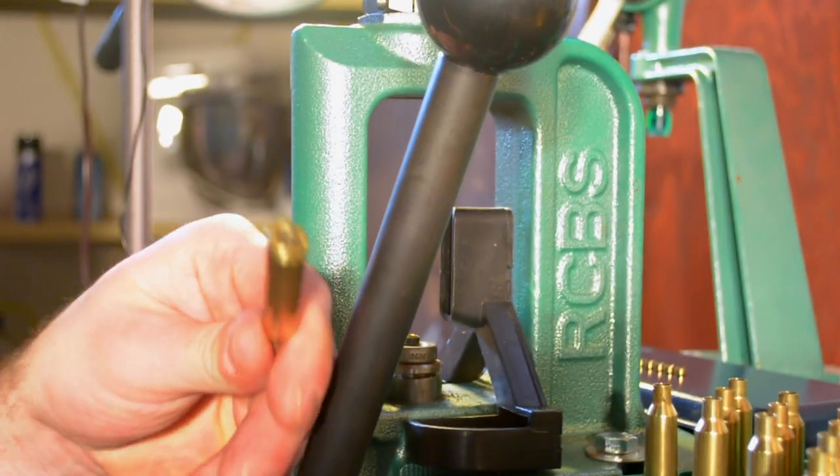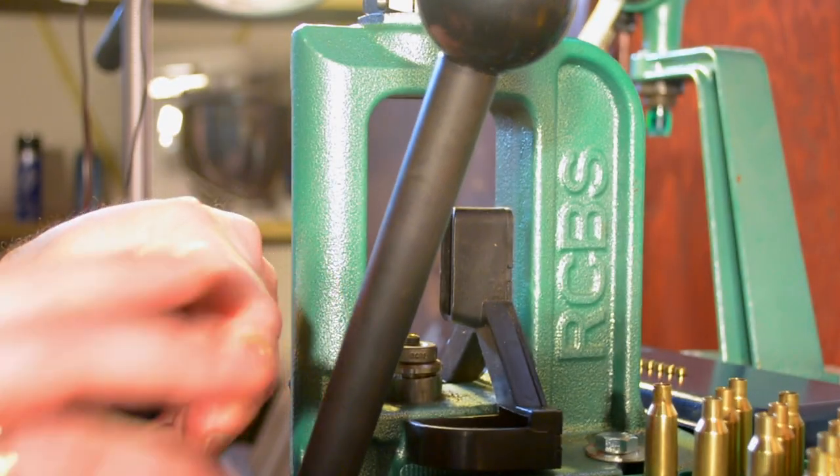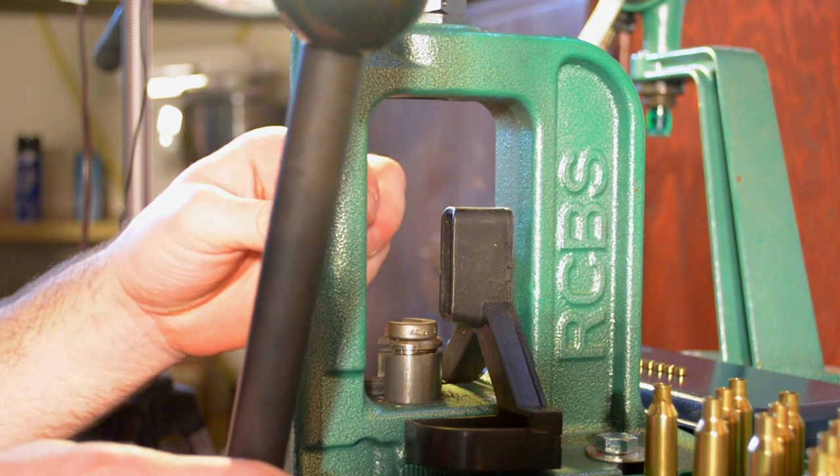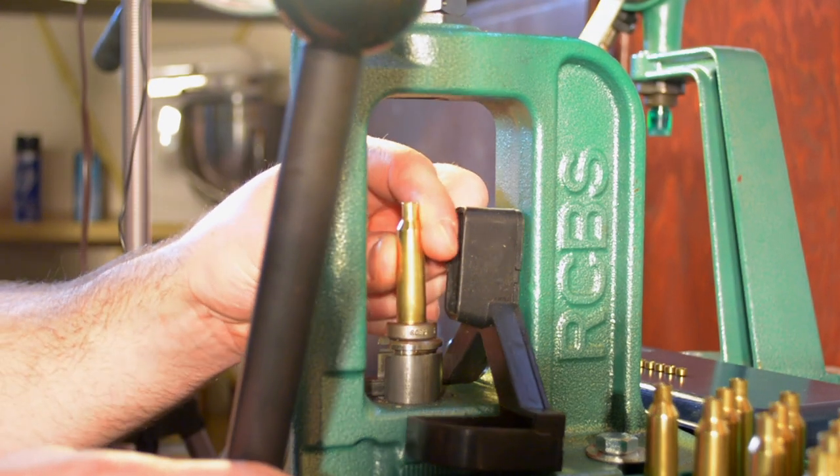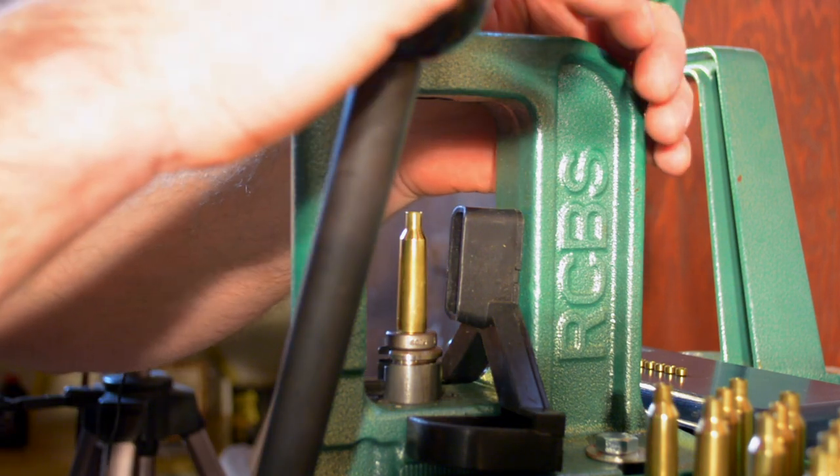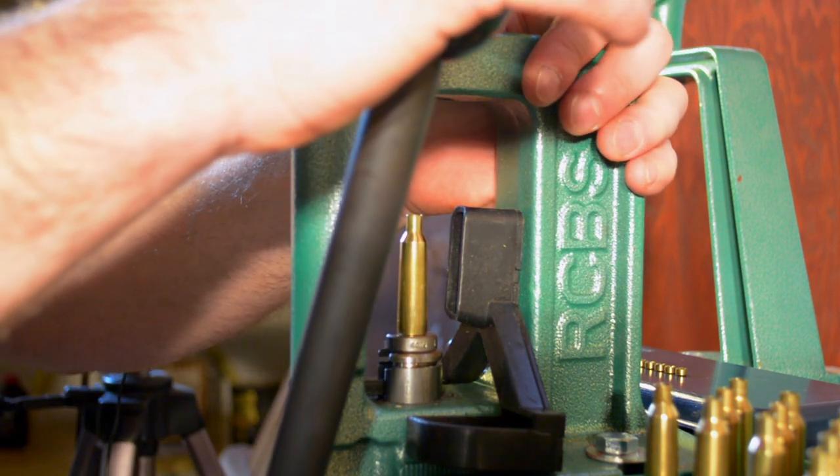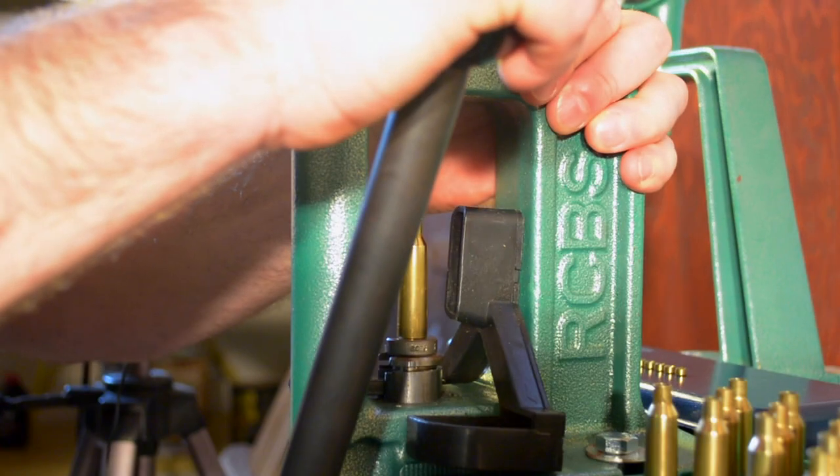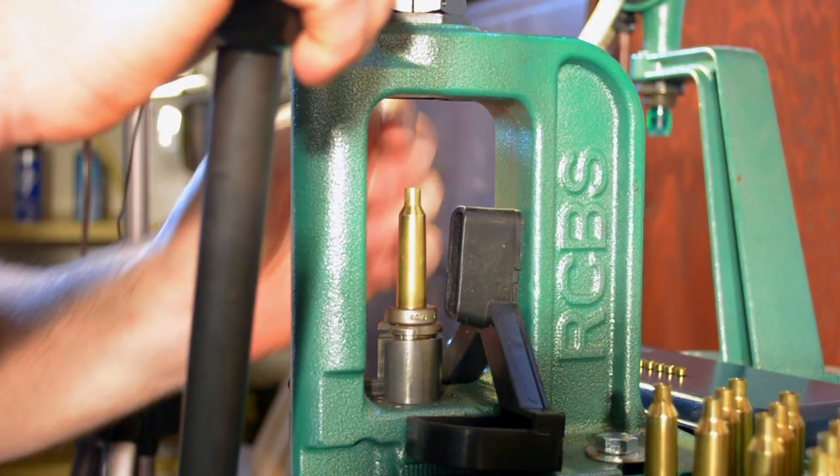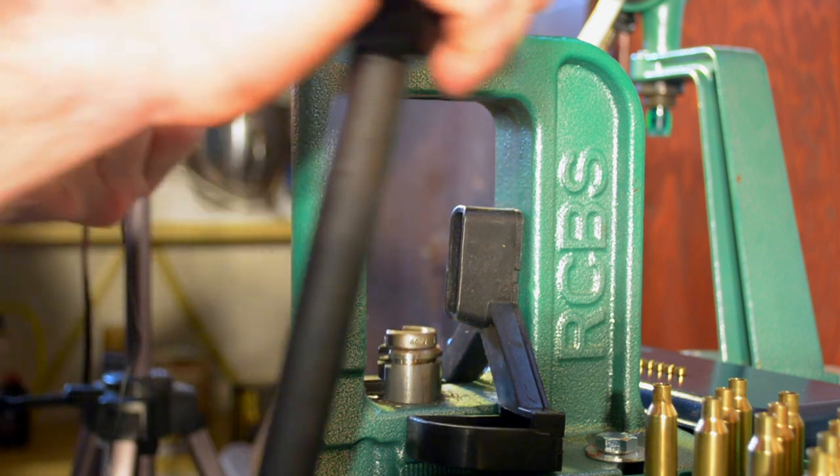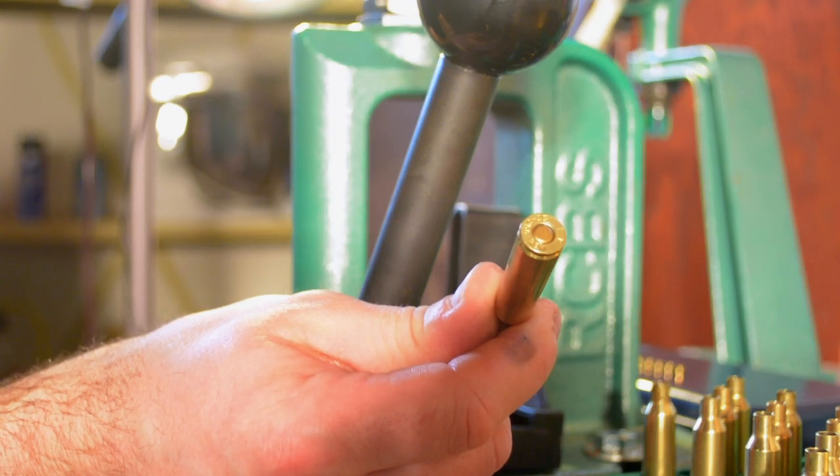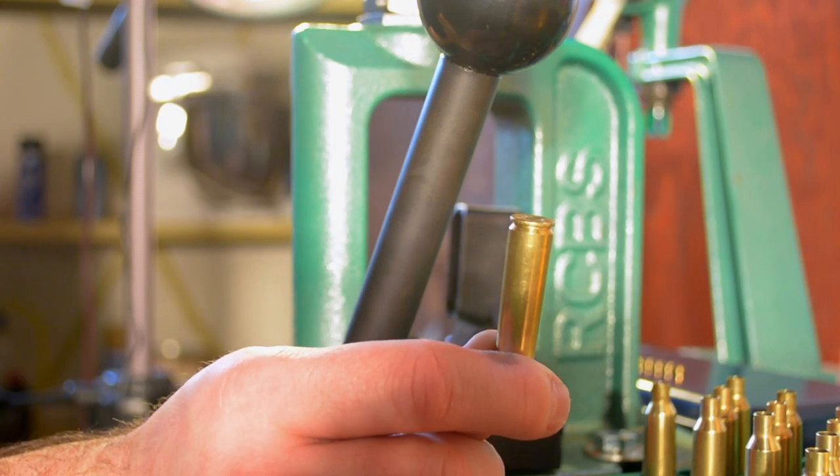Grab a case that's nice and cleaned out on the inside. Pull back just a bit so that cup is below the shell holder. Then I just let it sit there like that and just ever so gently press it until you feel it stop. It's not a lot of pressure, just enough so that you can get that primer to sit inside there nice and flush.